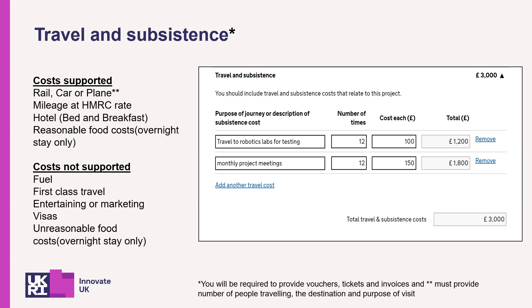For travel and subsistence costs, include things such as any essential meetings that need to happen during the project. You cannot include any sales and marketing activity, as this is ineligible. Travel costs must be at economy travel only, and you should be prepared to provide a breakdown of these costs if the project finance reviewer asks for more detail — for example, they might require you to split a trip into its subsistence, accommodation, and travel components.